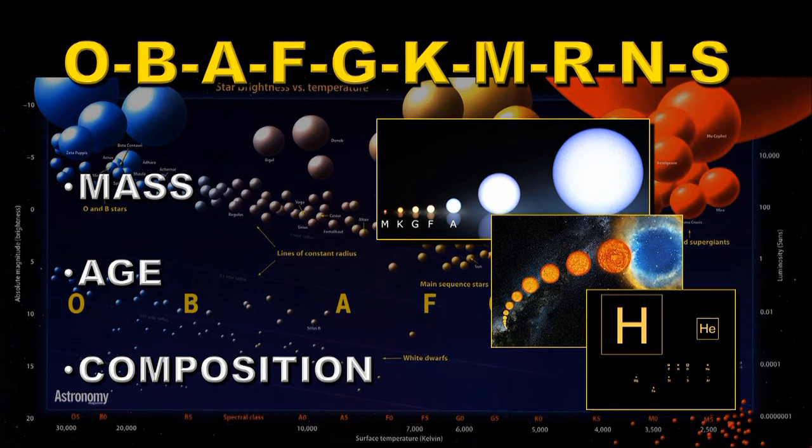...determines what the opacity of the star is and what the temperature of the star is. It's also an important indicator of the age of the star, because more heavier elements means that the material making the star has gone through more supernova explosions, and also the ability of that star to have planets.